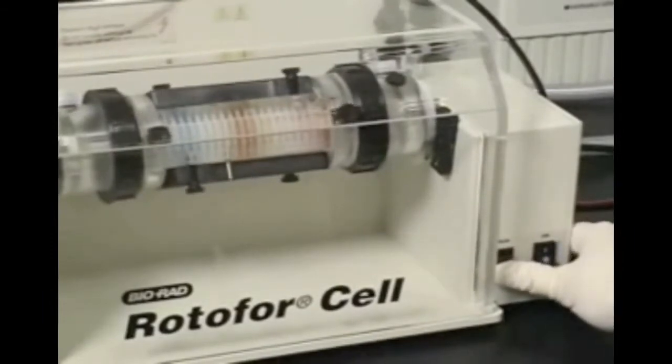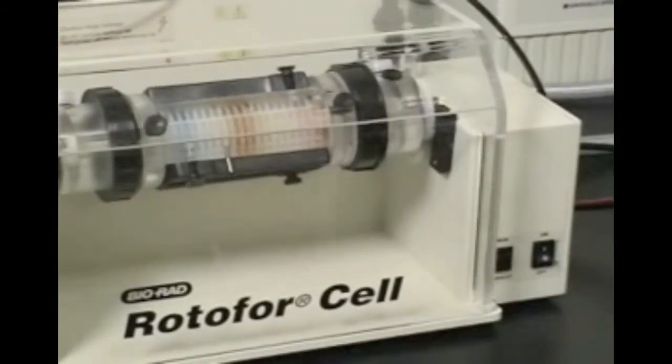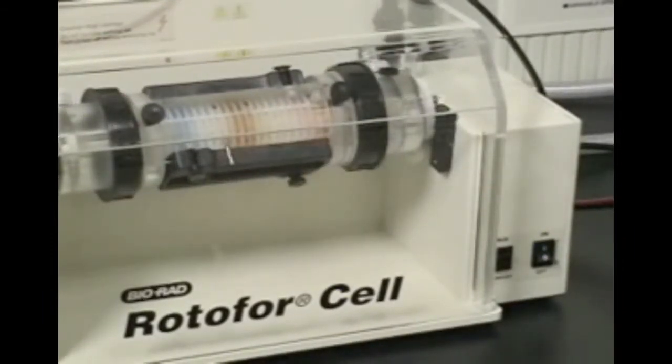Cytochrome C is an orange protein with a PI of 9.6. This protein focuses nearest the cathode.